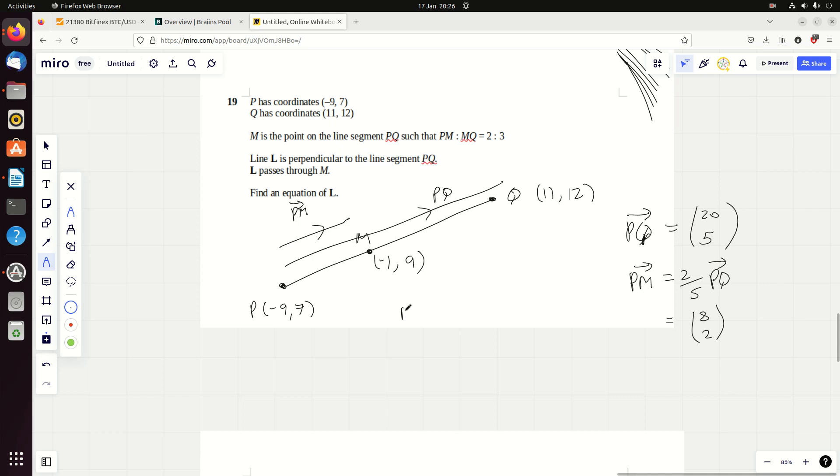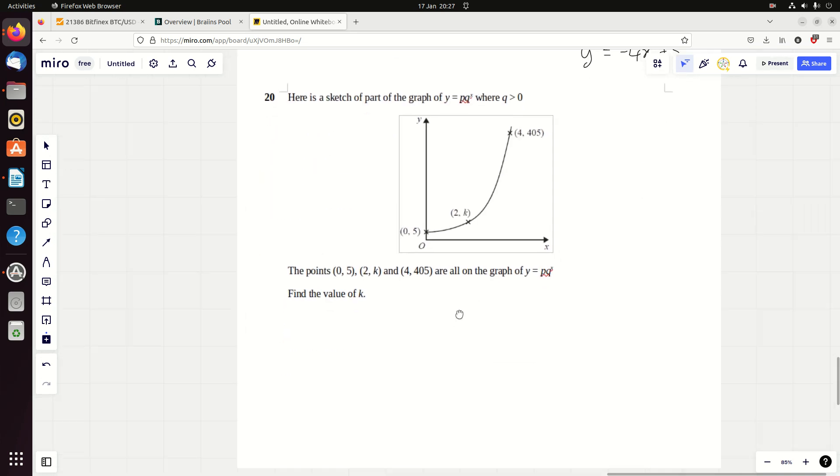L is perpendicular to PQ. Let's work out the gradient of PQ. The gradient of PQ is going to be change in y, which is 5, over change in x, which is 20. Notice they're both going up, so my gradient is positive, and this is a quarter. The perp gradient is just the negative reciprocal of that, which is minus 4. You're going to have y equals minus 4x plus c. We need a point on the line to find c. Well, that point is minus 1, 9. So let's plug in y is 9 when x is minus 1. You're going to get 9 equals 4 plus c. You can see c is 5, and you get y equals minus 4x plus 5.